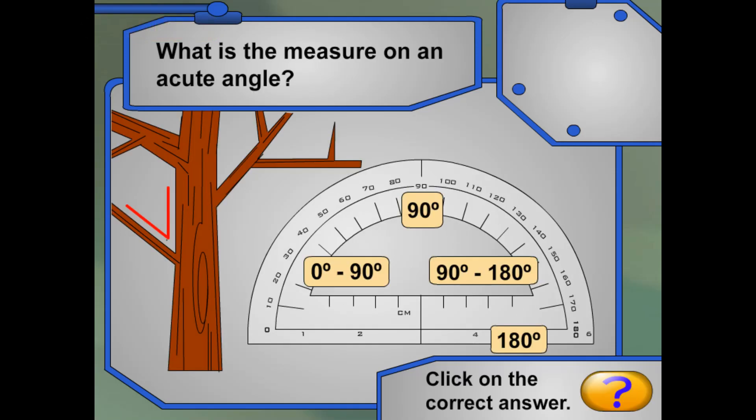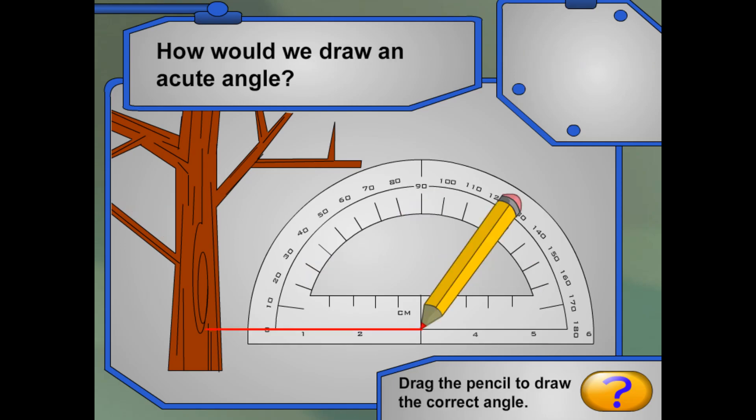Okay. Look at this first branch. I think the first angle is an acute angle. What is the measure on an acute angle? An acute angle measures between 0 and 90 degrees. Now, how would we draw an acute angle? Right! An acute angle measures between 0 and 90 degrees.